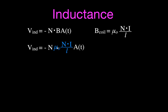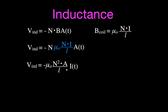Now I'm going to simplify this equation. I bring the constant mu-naught out in front, keeping the minus sign. I now have N squared, then the area, and the length on the bottom. I rearranged this because what I'm going to change to produce the self-induced voltage is the current over time, not the area. So the equation becomes: minus mu-naught times N squared times area divided by length, all multiplied by the rate of change of the current.